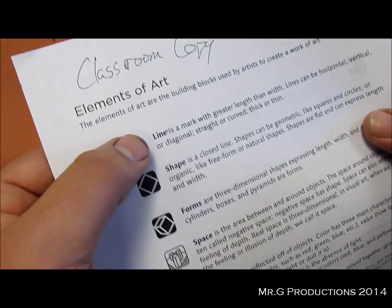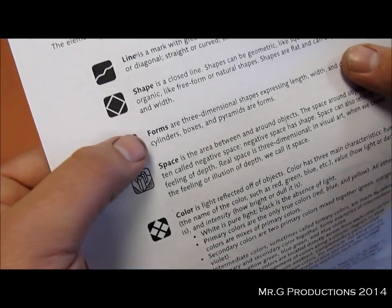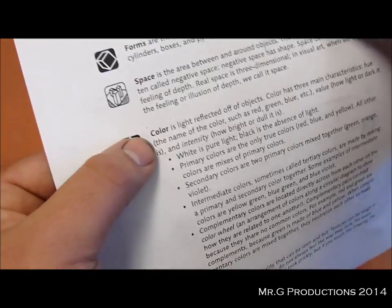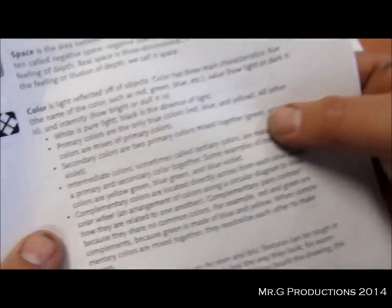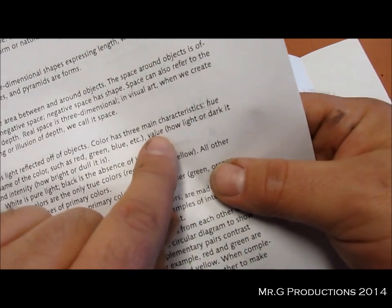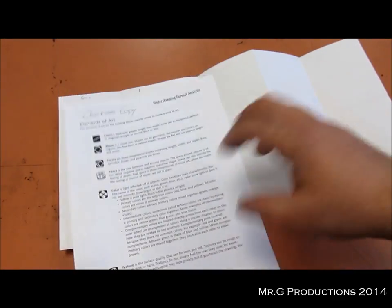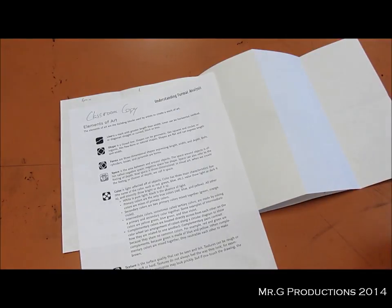And for our elements of art, we're going to do work on line, shape, forms, space, color, texture. And then when we look up in here, we're also going to use the word value. Value is also an element of art, just want to make sure that we have all of those seven for our elements of art.